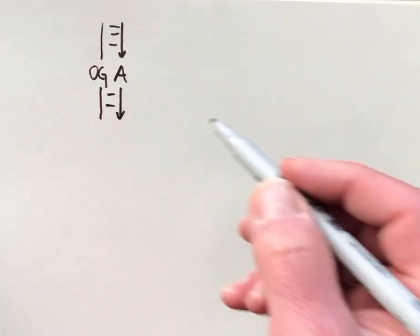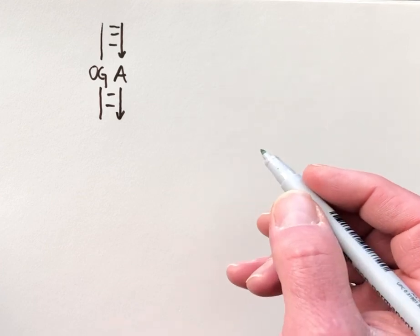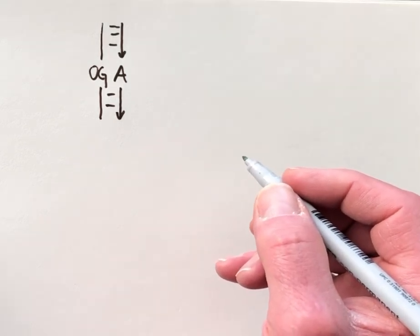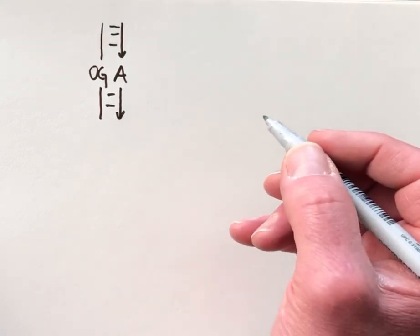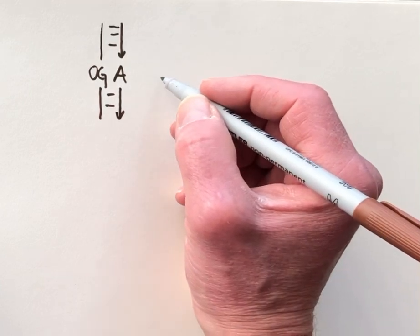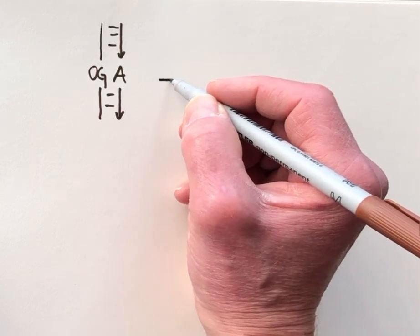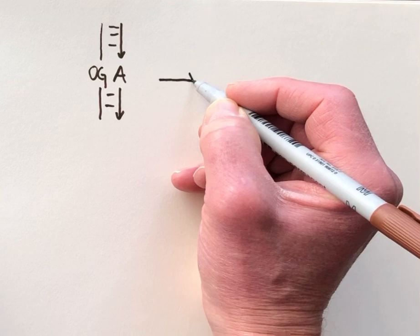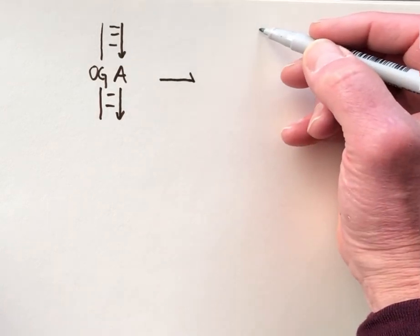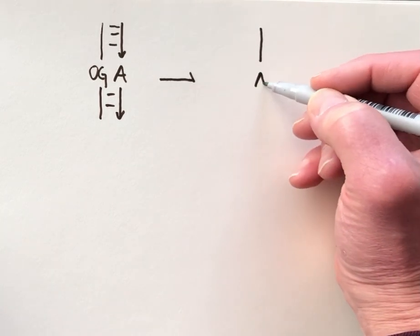And this is the OGA lesion, a site of DNA damage. And the reason why this is problematic is that with another round of replication, so now we're using the A-containing strand as the template.